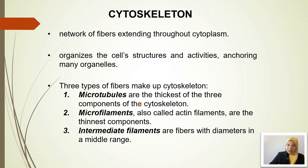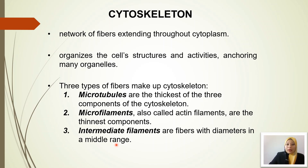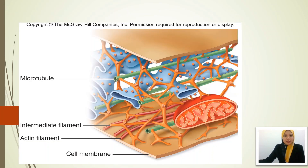We look at three types of cytoskeleton. The first is microtubules — the thickest cytoskeleton. The second is microfilaments, also known as actin filaments — the thinnest cytoskeleton. The last one has a diameter in the middle range and is known as intermediate filaments.